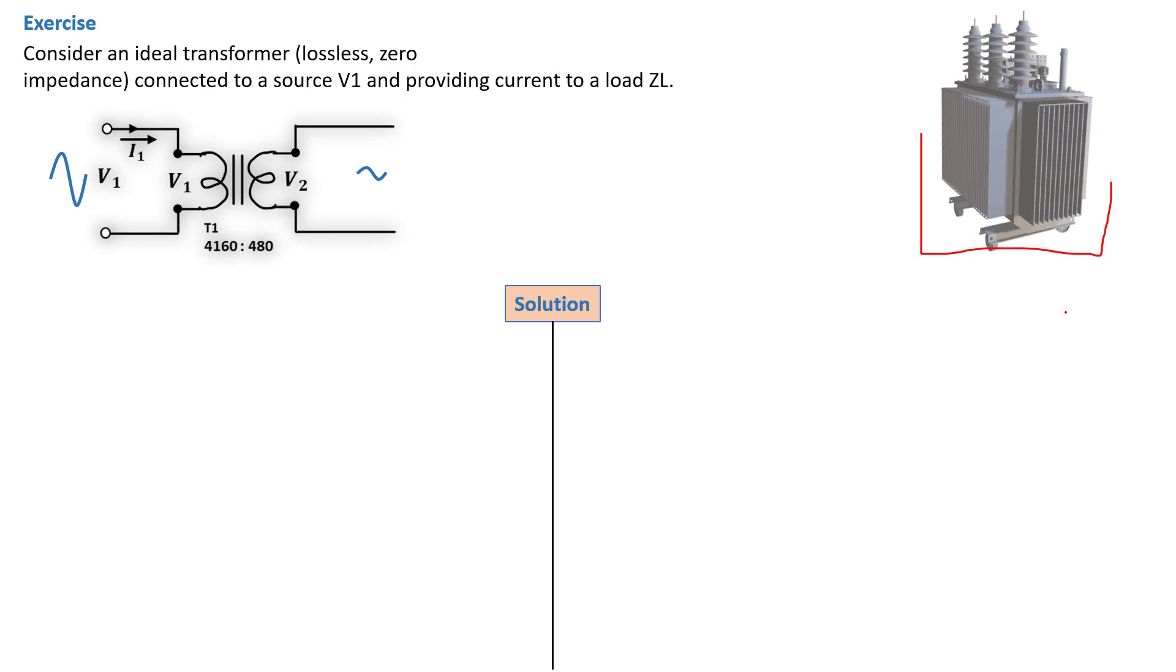The lower the impedance of the transformer, the lower the voltage required to produce full load current. This also implies that the lower the impedance of the transformer, the higher the full current that can flow from the particular transformer.